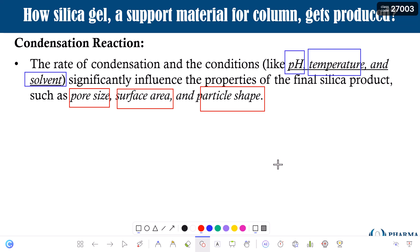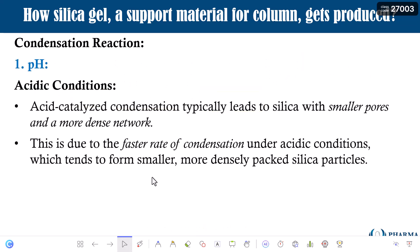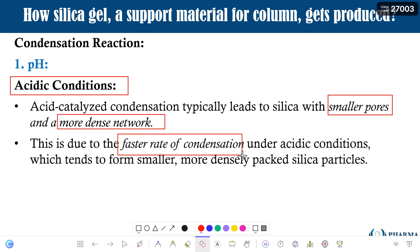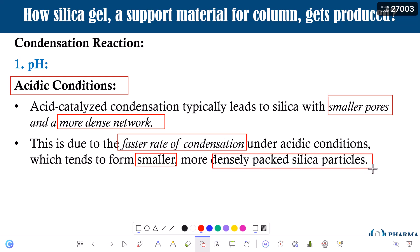Let us understand the important conditions that influence pore size, surface area, and particle size. The first parameter is pH. Under acidic pH, you generally get smaller pores and a more dense silica gel. The reason is that in acidic conditions the rate of condensation is quite fast, which tends to generate smaller particle size but densely packed silica particles.